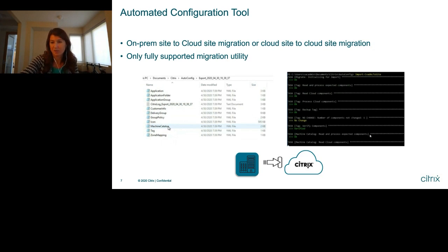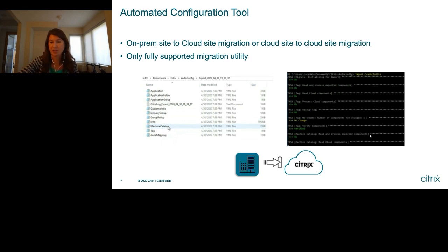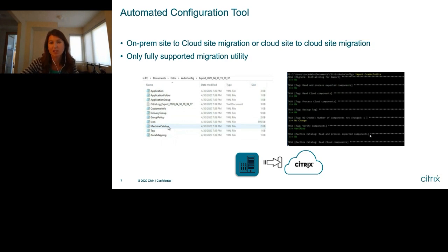You can open these YAML files in Notepad to edit them — for example, choosing to move only three out of six catalogs up to the Citrix Cloud Control Plane. You don't have to import the whole site at once; you can import just pieces of it using the automated configuration tool. At a future state, the goal is more of a DevOps model where we can synchronize configurations across separate cloud sites, running not just at migration time but during normal operations.